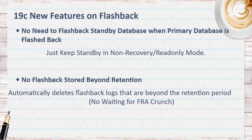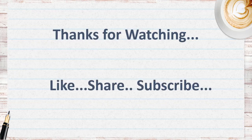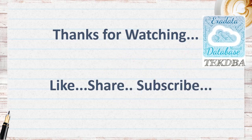Another feature in 19c is the ability to purge flashback logs from the FRA. The primary objective of FRA is to keep backup files until it reaches the threshold of the allocated size. But since flashback logs had no limitation on FRA, many times flashback logs beyond the retention period were dumping into FRA, causing archive or hot backup files to get purged. Starting with Oracle 19c, Oracle monitors the flashback logs in the FRA and automatically deletes flashback logs that are beyond the retention period. So we don't need to turn off or turn on flashback to purge the flashback logs on FRA. If you have any specific TBA topic to discuss, please update in the comments.